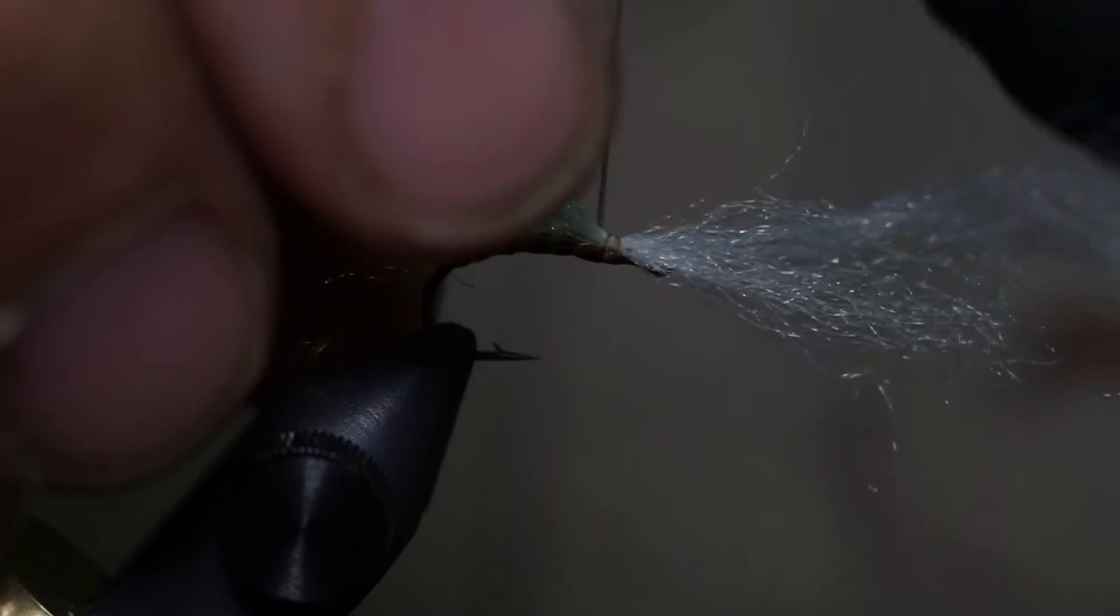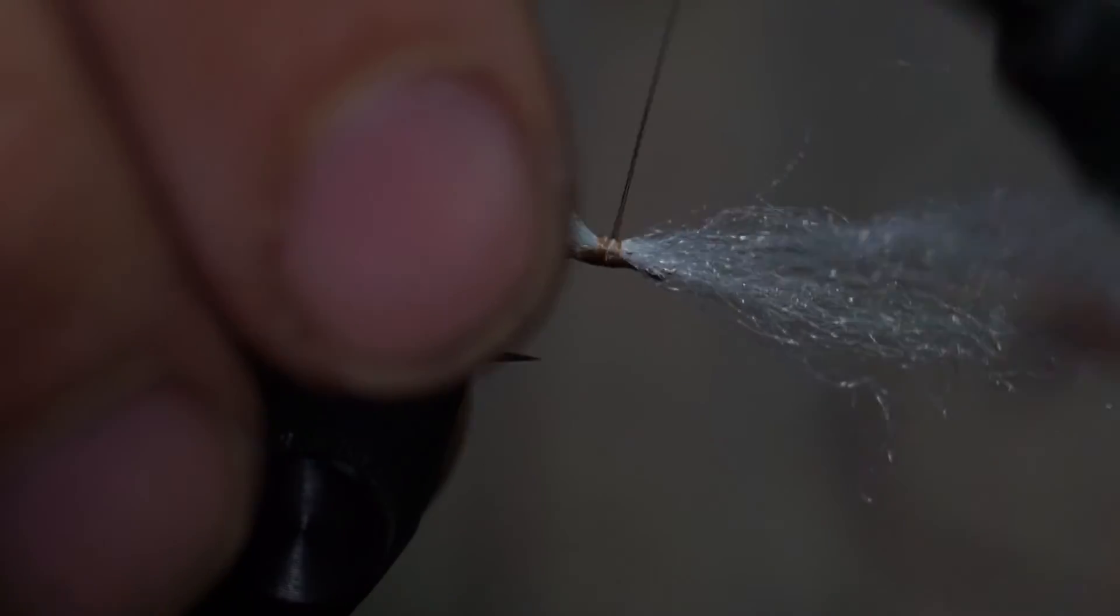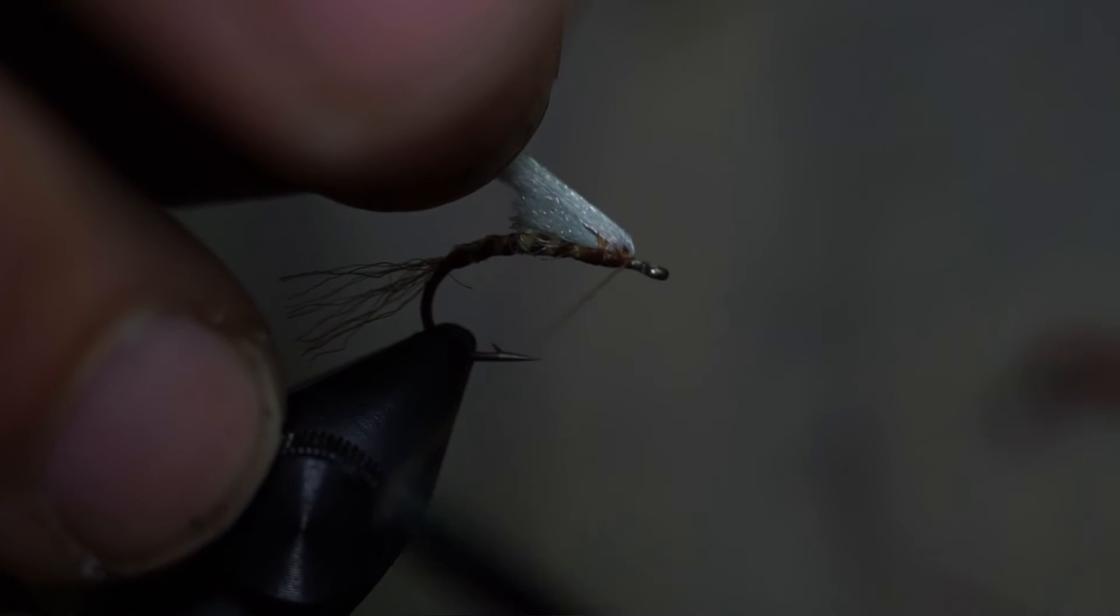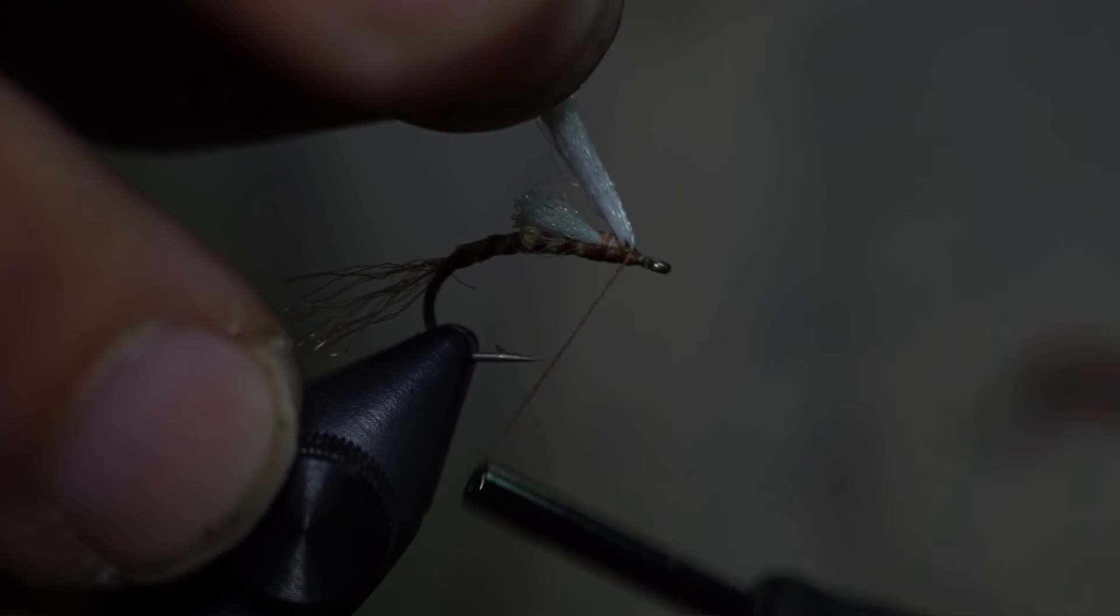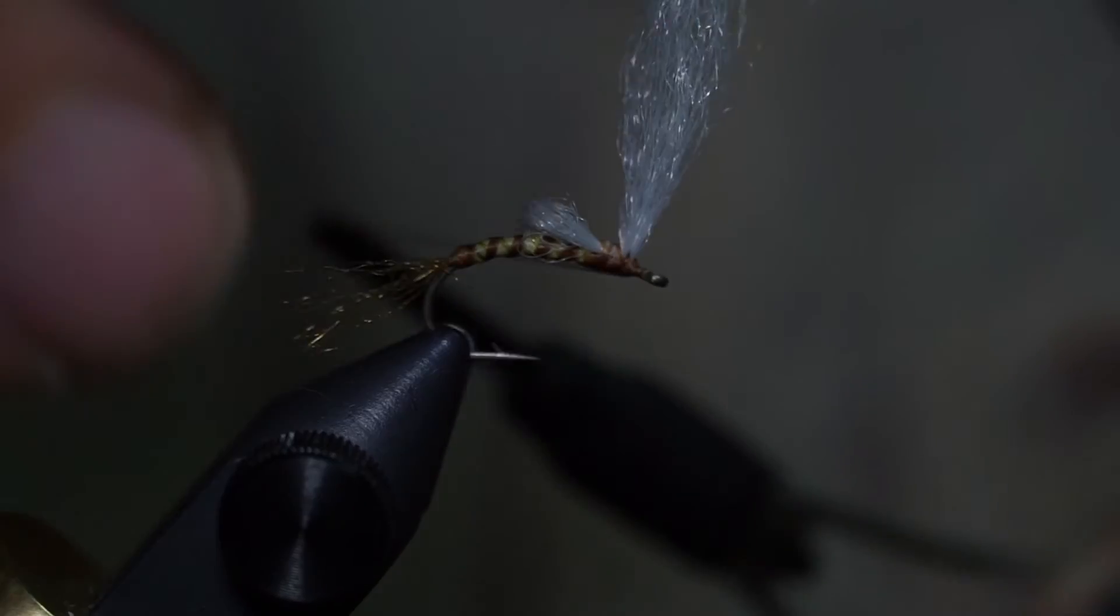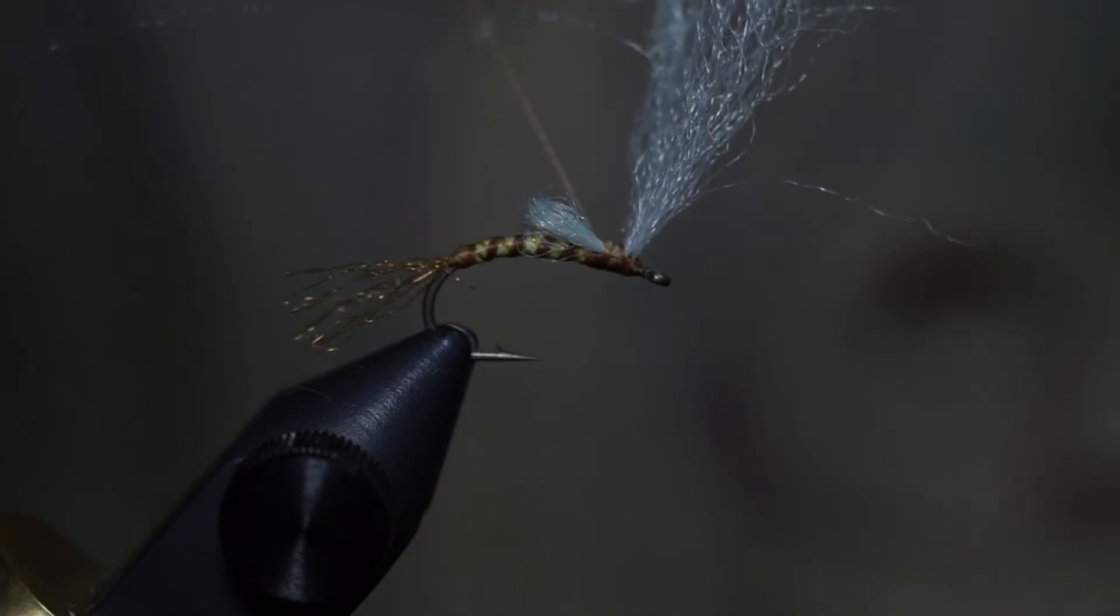And then what I like to do is I make a little loop and tie the back end of the parachute post out the front. So I have two sections. Next I will wrap in front of those parachute posts and get them to stick up by wrapping in front of them.